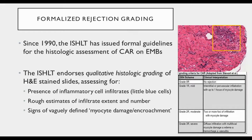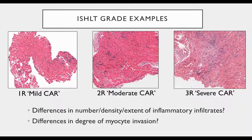Since 1990, the International Society for Heart and Lung Transplantation has issued formal guidelines for the histologic assessment of rejection on biopsies. The ISHLT endorses qualitative histologic grading of H&E stained slides for assessing the presence of inflammatory cell infiltrates, as well as rough estimates of infiltrate extent and number, and signs of myocyte damage or encroachment. It's a four-grade scale, 0R to 3R, with brief descriptions of what defines each grade. The vagaries and subjectivities of these descriptions present a real challenge.